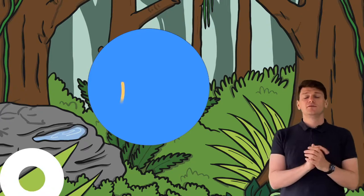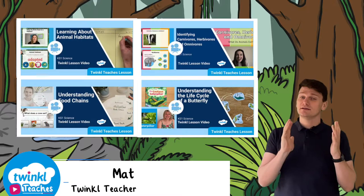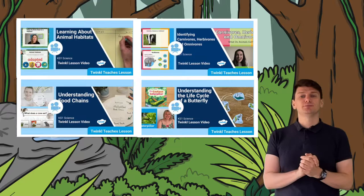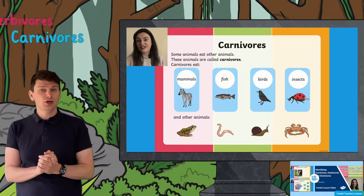If you're looking for some fun and engaging lesson videos to help your children learn all about animals, life cycles and habitats, then these superb lessons from our amazing Twinkle Teachers team could be just what you need. In this great Key Stage 1 video lesson, Twinkle Teacher Miriam looks at identifying carnivores, herbivores and omnivores. It's a great resource for teaching Key Stage 1 students what different animals eat.